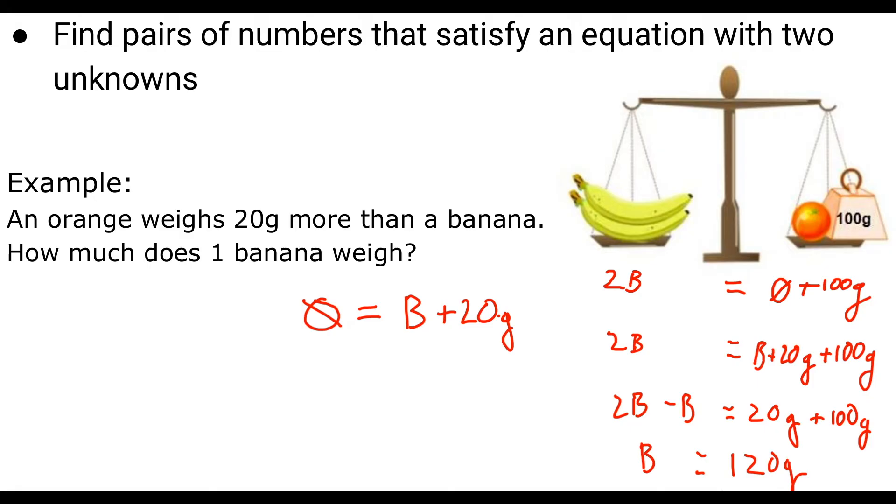And what I always say is put that back into the equation. Does it make sense? Well, 2 bananas, if they're 120 grams each, would be 120 at 120, which is 240. Now, in order for this to be the case, this needs to add up to 240 as well. We've been told that an orange is 20 grams more than a banana. Well, if our banana is 120, that must mean that's 140. So 140 plus 100 also makes 240. Both sides make 240. So therefore, the weight of a banana is 120 grams.